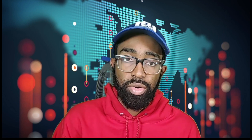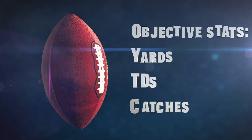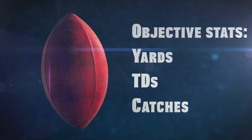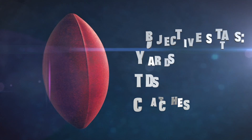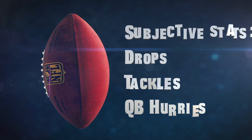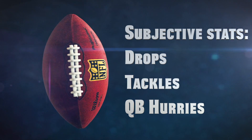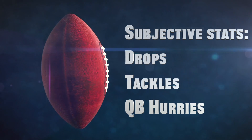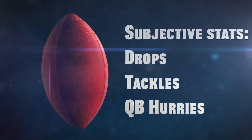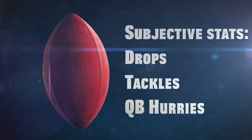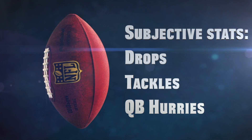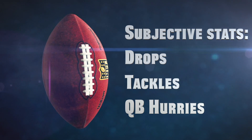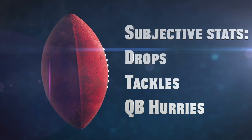There are a number of ways that you can consume statistics in sports. To keep it simple, I'll divide it into three categories. Objective stats — those are yards, touchdowns, catches. Subjective stats — those would be drops, tackles, and quarterback hurries. The reason I call those stats subjective is because you can have two people in on a tackle. Sometimes the third person that's in on that tackle doesn't get credit. Sometimes they do. It's very inconsistent.